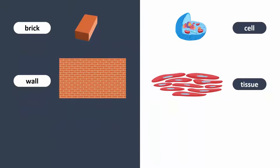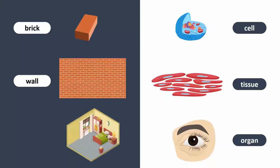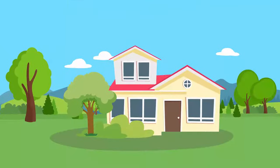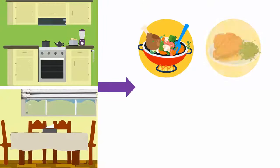These tissues then combine to form an organ that completes a specific task, much like the walls make up a room for a specific function. Different rooms in a house work together to provide a function. For example, the kitchen and the dining room are both needed to provide food.